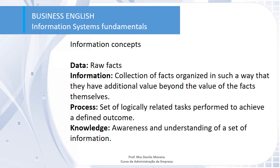Data is only raw facts, so it doesn't give us a lot of information. For example, if I put the number one in front of you without any other information, you just know it is the number one. Information is a collection of facts organized in such a way that they have additional value beyond the value of the facts themselves. If I put the letter M before the number one, you could think it is one meter. If I put KM, it could be one kilometer. So now you have one useful information — before you only had data.